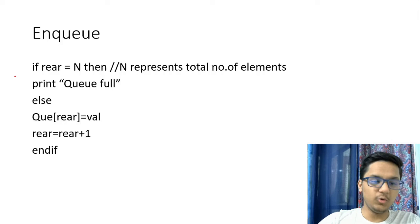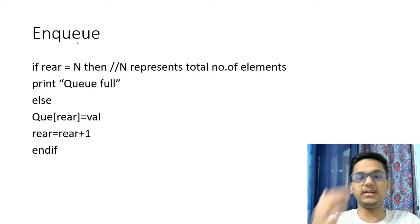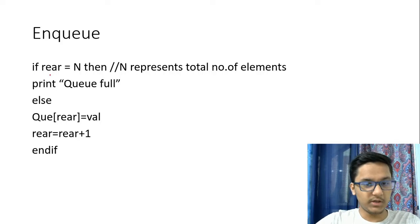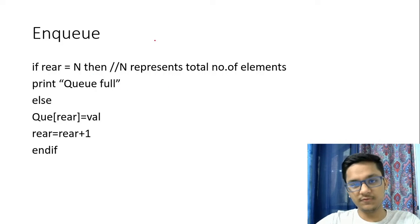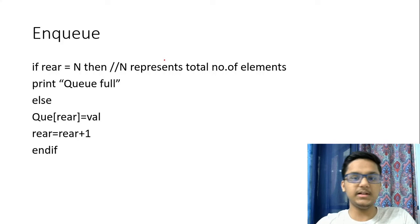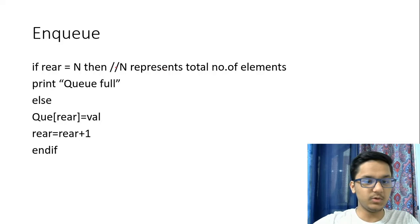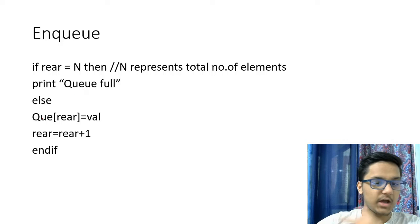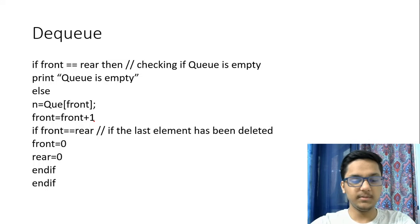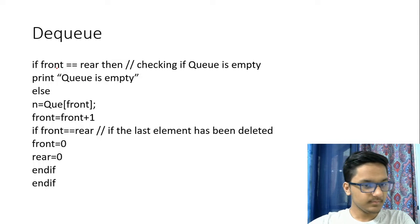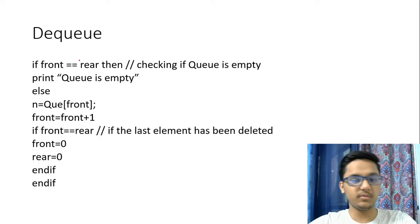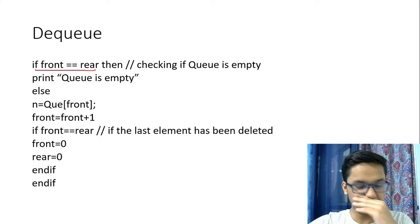Here's a sample algorithm for the enqueue operation — this is not actual code, but a way to write the logic so anyone can understand it. If the rear pointer is equal to the total number of elements, the queue is full, and trying to enqueue will result in an overflow. If you try to dequeue from an empty queue, it results in an underflow — the same terminology used in stacks. Otherwise, you assign a value at the rear position and increment rear. For dequeue, you increment the front pointer, but first check if front equals rear — meaning the queue is already empty.